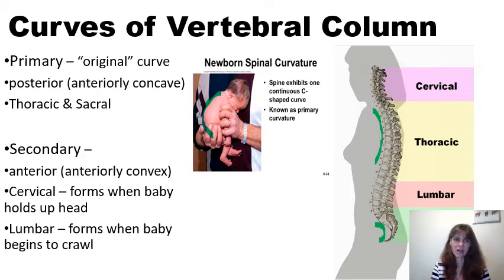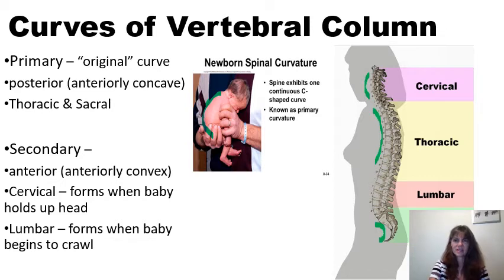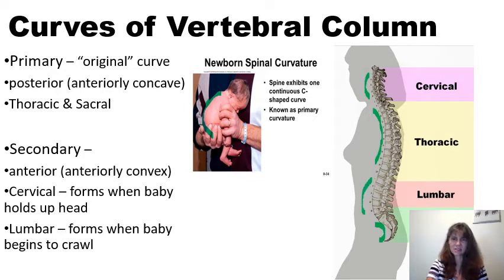Secondary curves occur when the baby lifts up its head and starts looking around, forming a secondary cervical curve that is concave posteriorly. That is known as a lordotic curve. The lumbar curvature occurs when the baby starts to crawl because the baby can't hold its stomach up, causing that lumbar curvature, which is another secondary lordotic curve. So the primary curves are kyphotic and the secondary curves are lordotic.